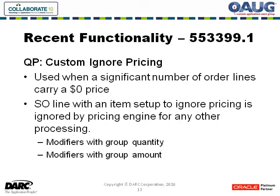There is a new piece of functionality available. Note 553-399.1 describes it — it allows you to do a shortcut if you have a significant number of items that carry a $0 price. Essentially, a profile option is provided that you set, and then you provide some logic to the application so that any order line that is going to return a $0 price will process much more efficiently.